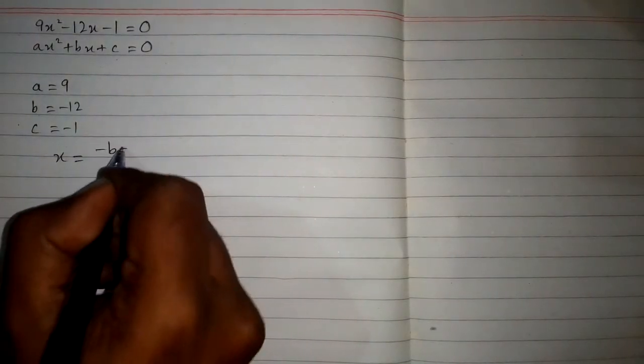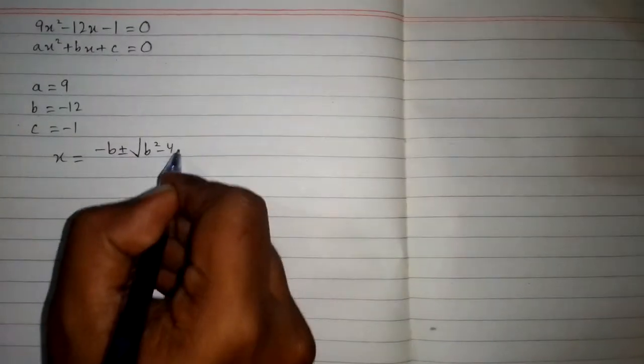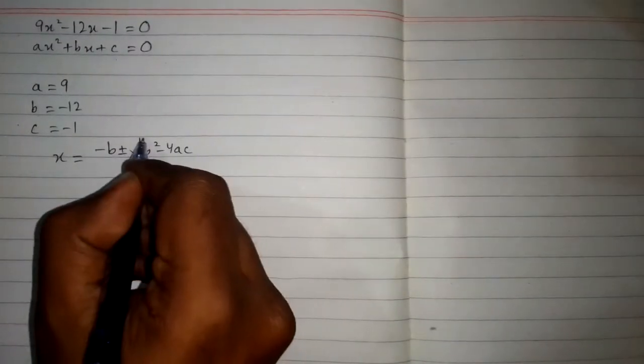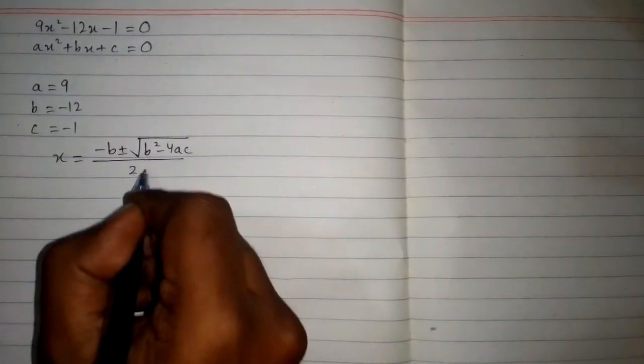Now we will apply the quadratic formula which is x is equal to minus b plus minus under root b square minus 4ac upon 2a.